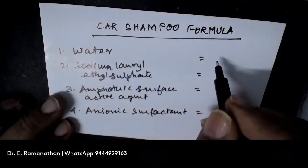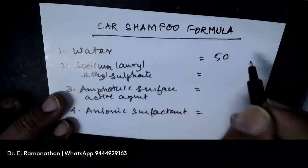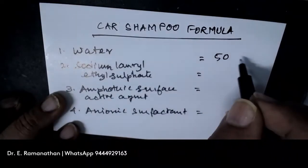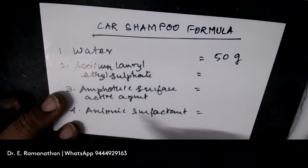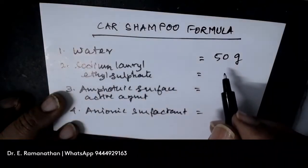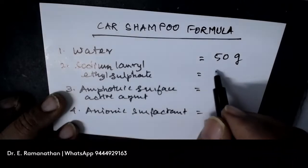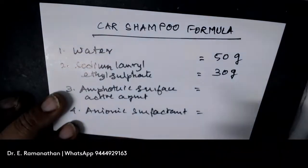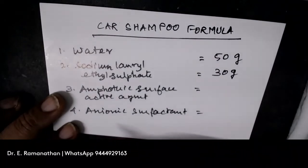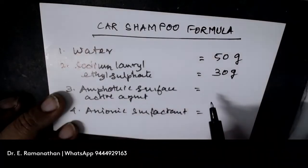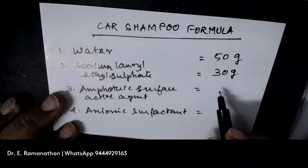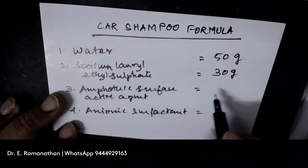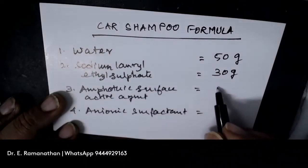Usually we can take 50% by weight. You can measure in grams or kilograms — so you can take 50 grams of water and dissolve 30 grams of Sodium Laurel Ethyl Sulphate. Then you can add an Amphoteric Surface Active Agent — amphoteric means it will have both cationic and anionic nature — and you can roughly include 10 grams for better efficiency.